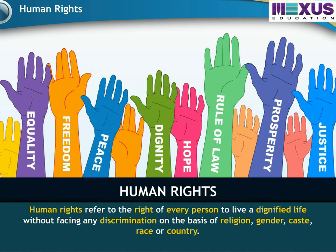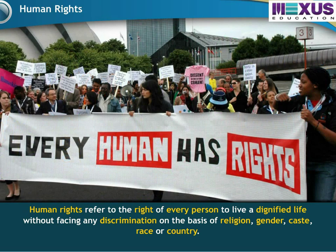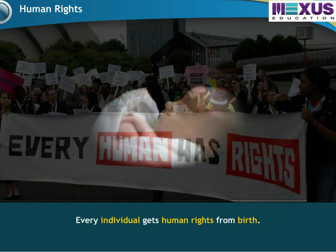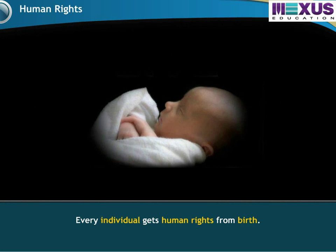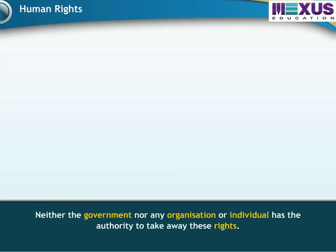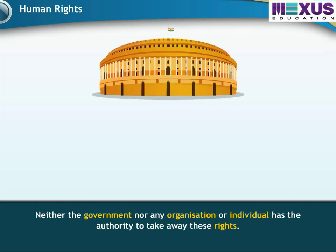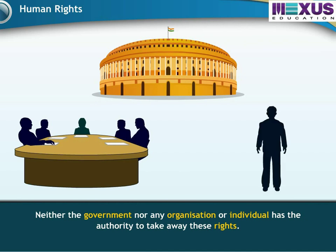Human Rights refer to the right of every person to live a dignified life without facing any discrimination on the basis of religion, gender, caste, race or country. Every individual gets human rights from birth. Neither the government nor any organization or individual has the authority to take away these rights.